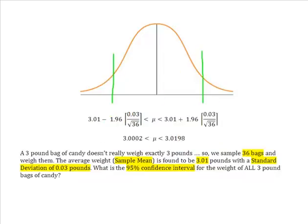So now what I've done is I've simply finished my math and what I know is that the mean, remember the mean is in the center, what I now know is that I am 95% certain that the true weight or the weight of all three pound bags of candy is between, the average weight is between 3.0198 on the high side and 3.0002 on the low side.